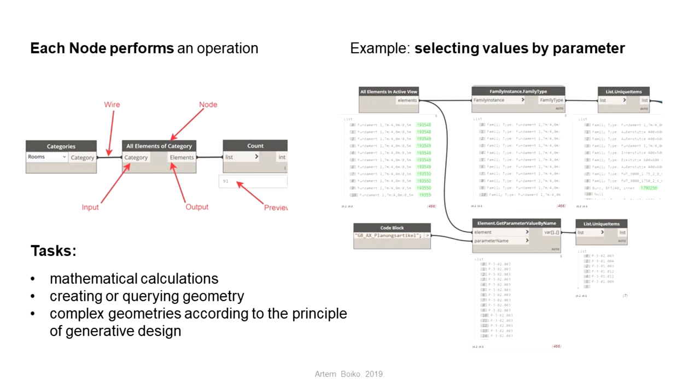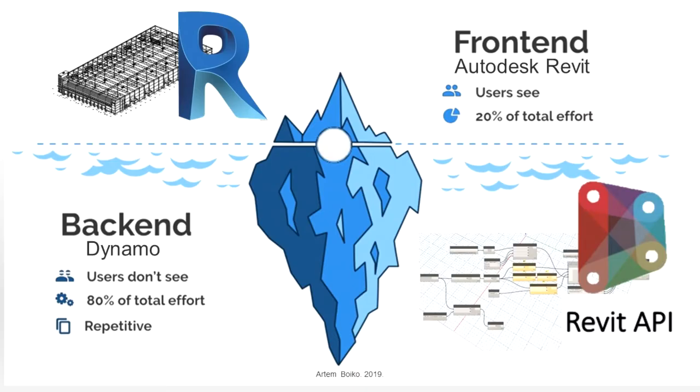Dynamo is a visual programming tool that works with Revit. Dynamo extends the power of Revit by providing access to the Revit API, application programming interface, in a more accessible way.